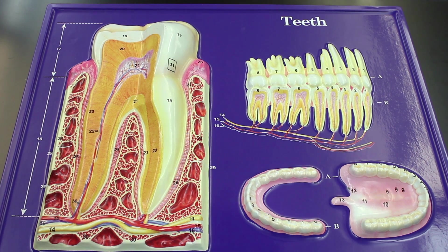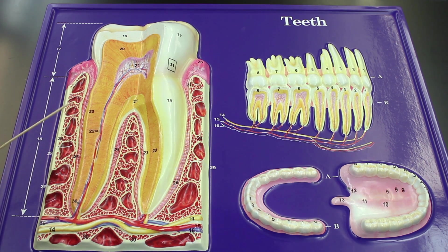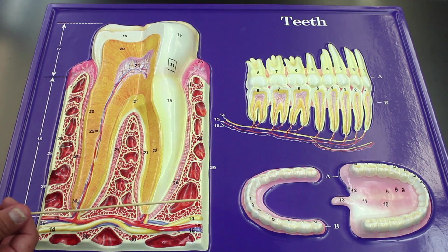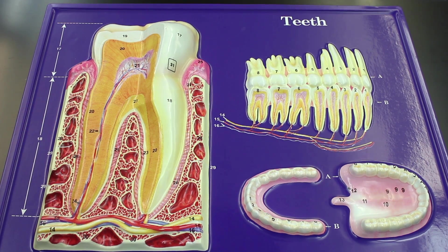In this video we're going to talk about the teeth. We're going to look at a whole bunch of different structures, take a look at an actual nice-sized tooth, look over all the components, take a look at the maxillary and the mandibular components, and then look at the maxillary and mandibular dentition.